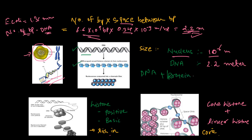In the prokaryotic cell the protein has a positively charged nature and the DNA has a negatively charged nature, so the DNA is held with some proteins. This region is called the nucleoid in the prokaryotic cell.